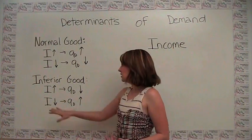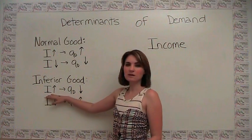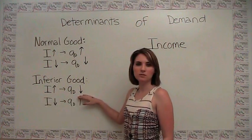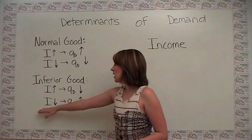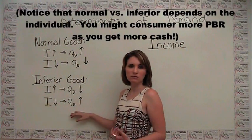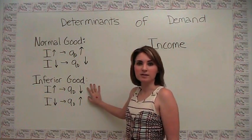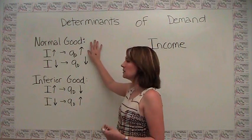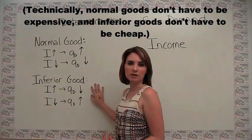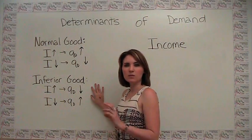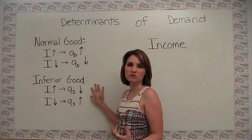While this might at first seem surprising, given the framework of the inferior good it makes a lot of sense. As consumers' income goes up, they consume less cheap beer, presumably because they trade up to something better. When incomes go down, they consume more cheap beer. A more typical example: filet mignon is a normal good, whereas hamburger is an inferior good. Normal and inferior goods don't have to be paired that way, but it's helpful to remember which is which.